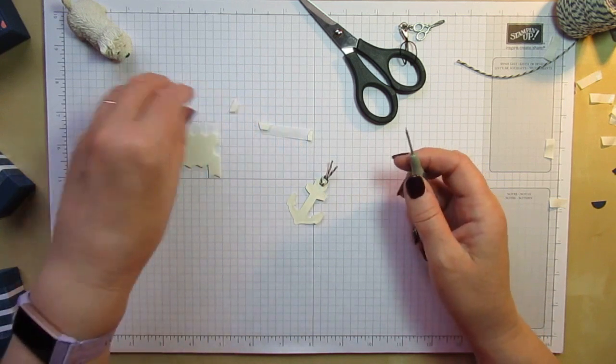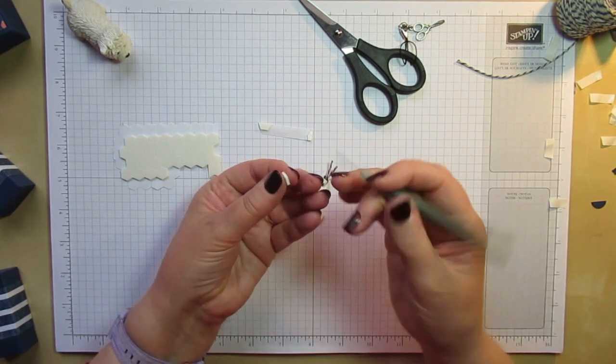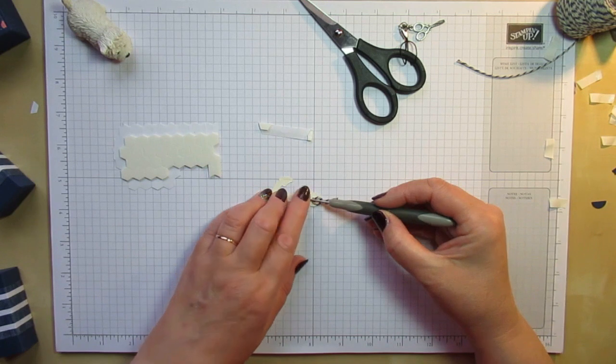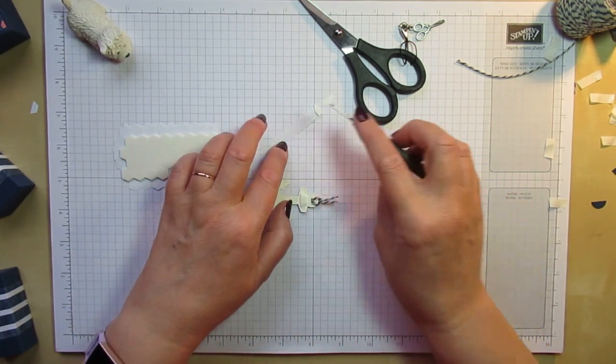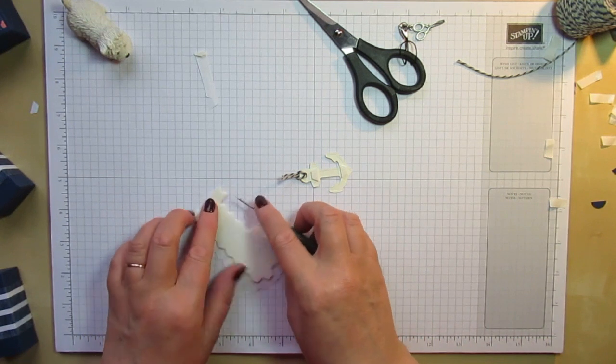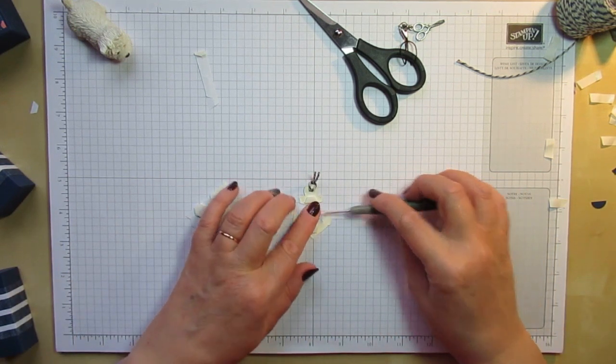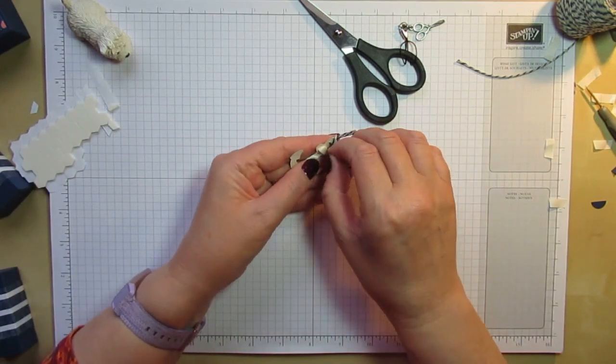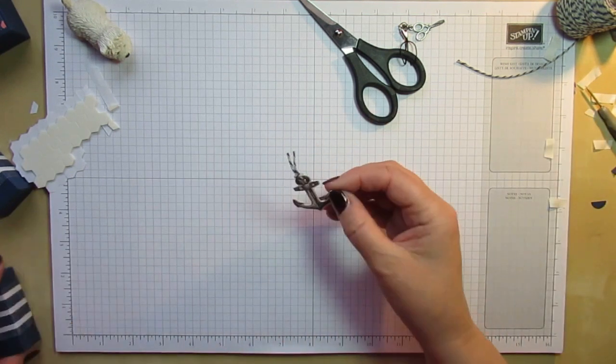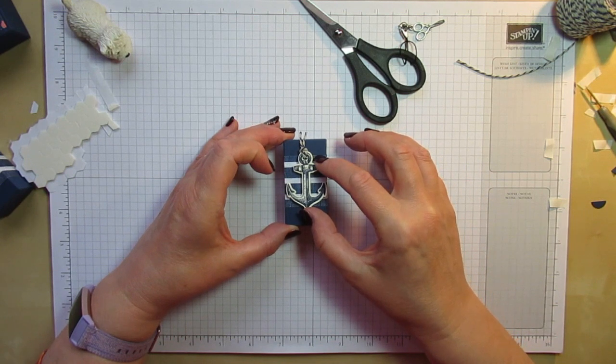So pop that on there and hopefully this bit will come off the backing paper this time. And pop that little bit on the bottom here. And one more piece if I can get it off of the backing. And that just sits nicely in the middle. Then all you need to do is pop the backing off of each of your dimensionals and bring in your box and pop that in the middle of the belly band. And there we go.